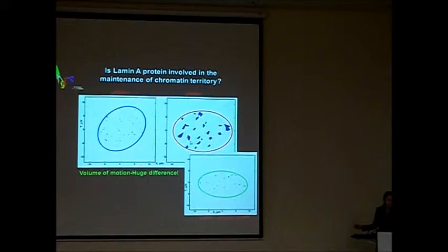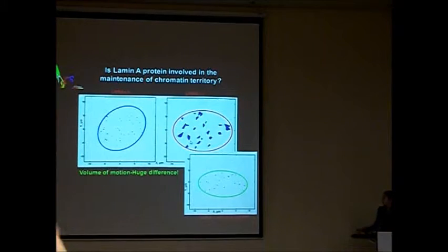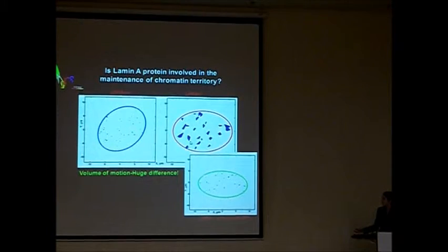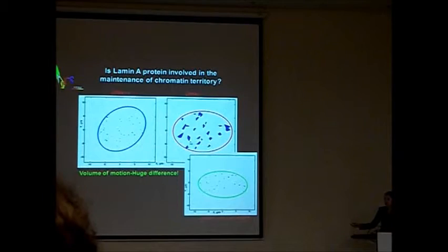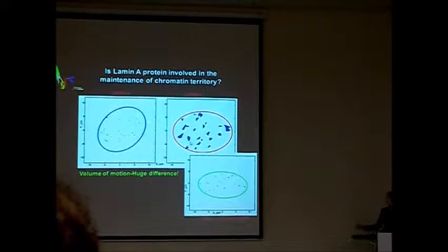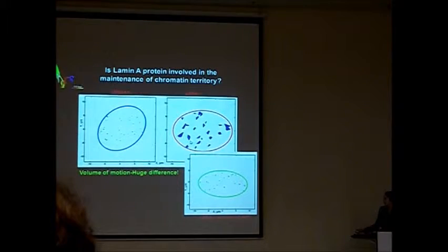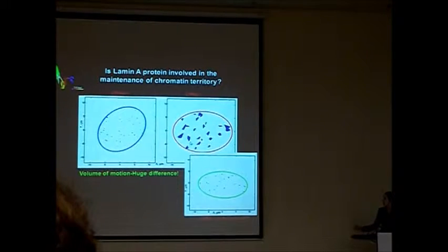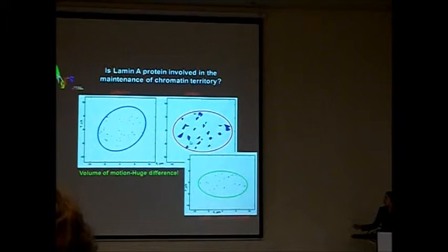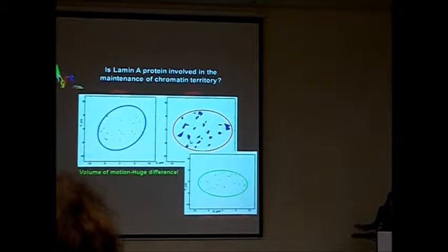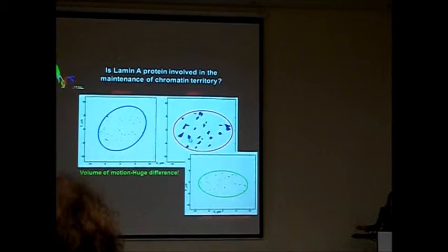In order to be sure that such kind of effect is only due to lamin A depletion, we expressed lamin A protein in lamin A depleted cells. For those who are not familiar with biology, we just added lamin A in lamin A depleted cells. And we saw that telomere motions decreased back to normal. So we can conclude that such effect of lamin A depletion on chromatin motion is only due to the lamin A depletion, not some other effect.